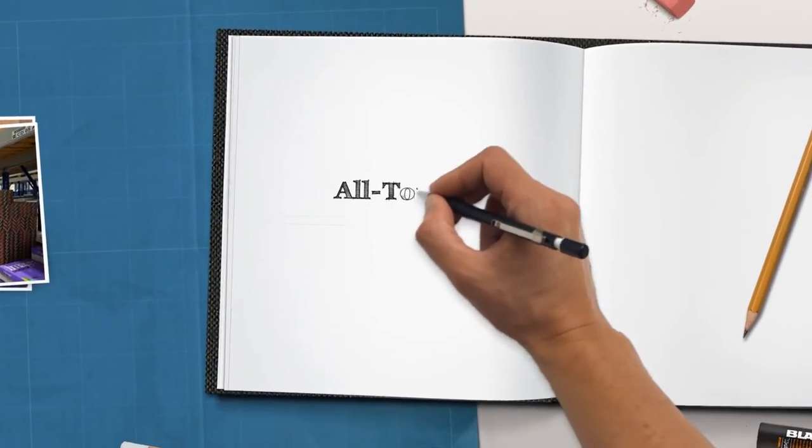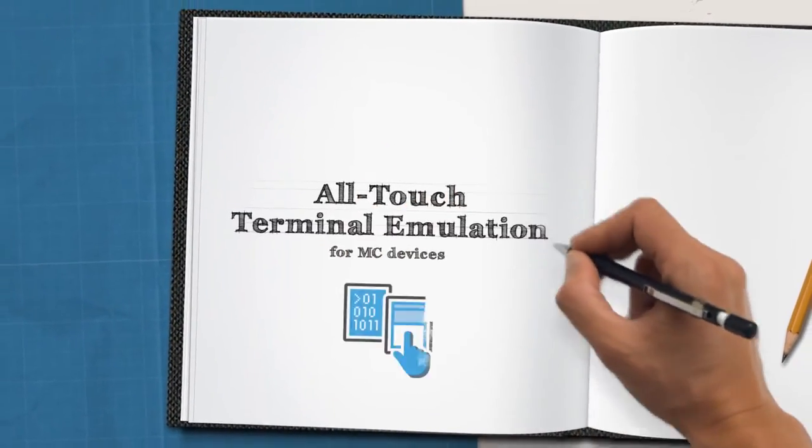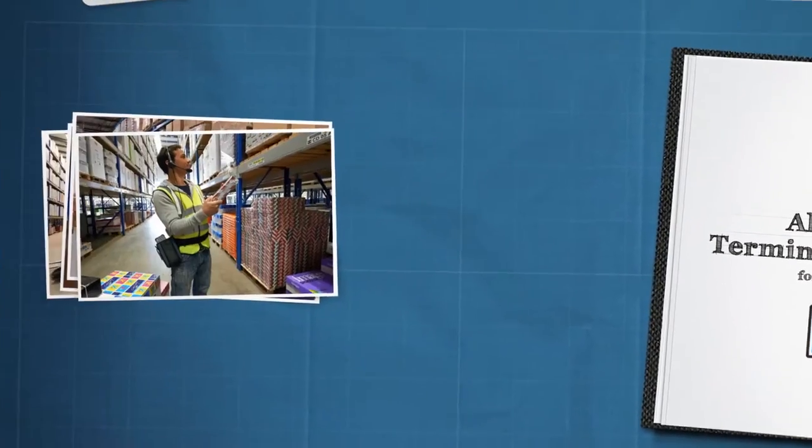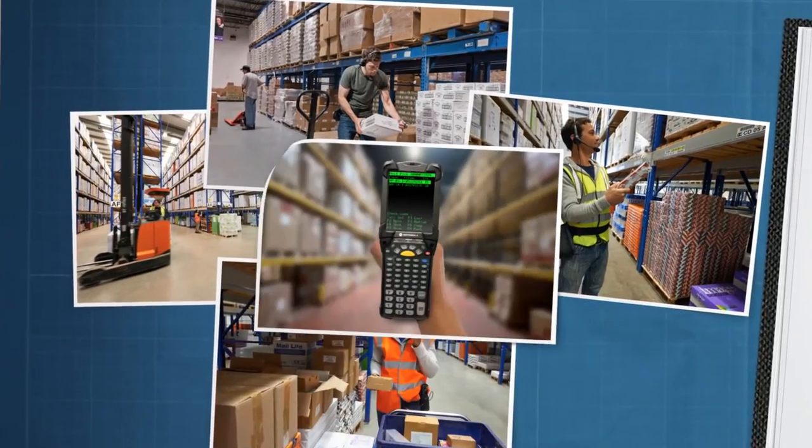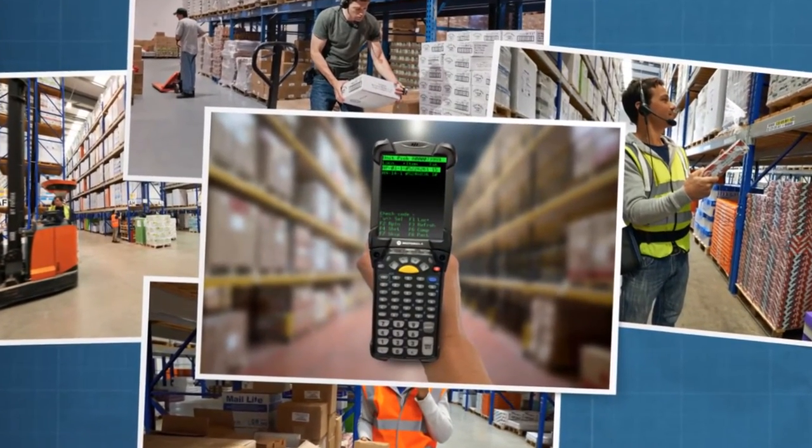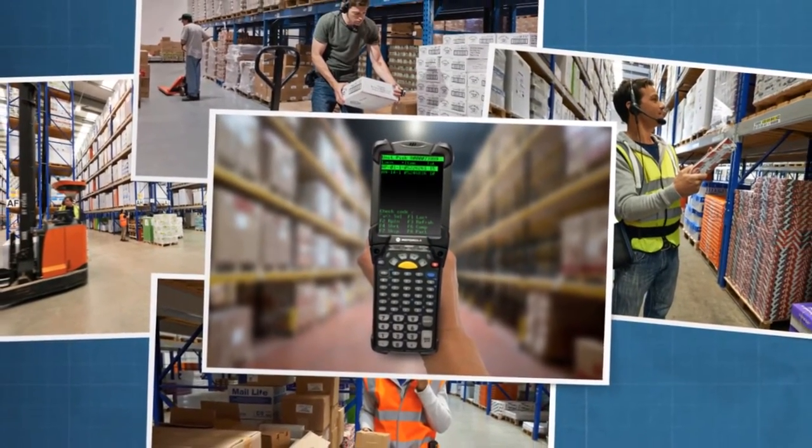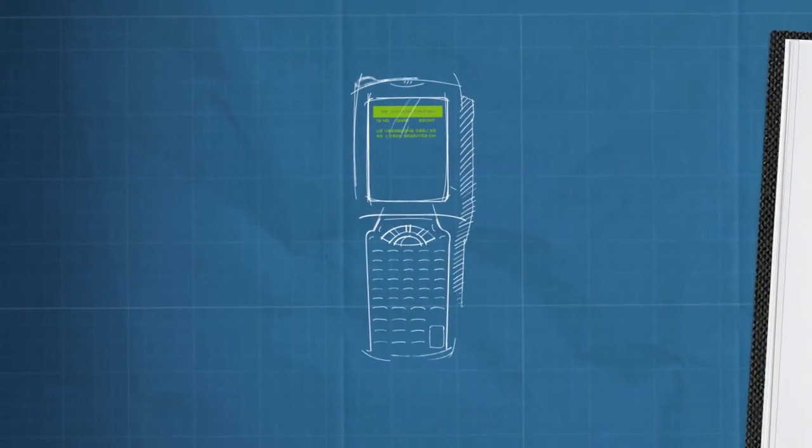What's on the board for today? All-touch terminal emulation. What do we know? There are all these warehouses where workers scan and pick. They're using our MC9000s with a green screen appearance that looks like a software utility from the DOS platform days.